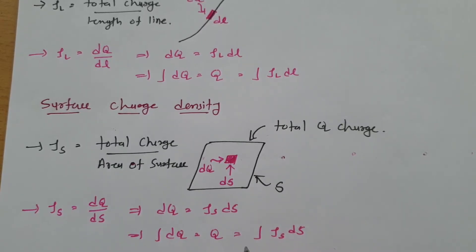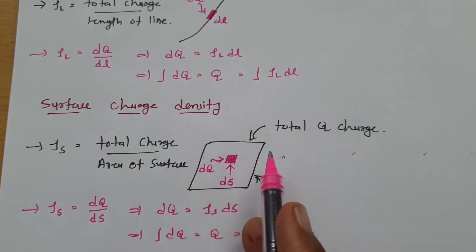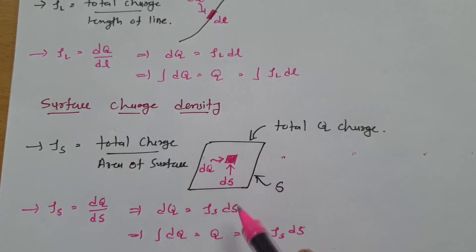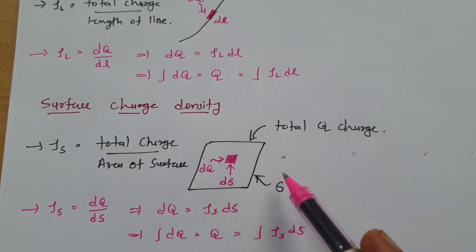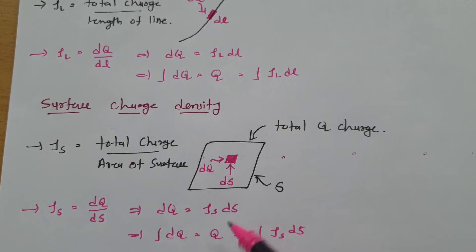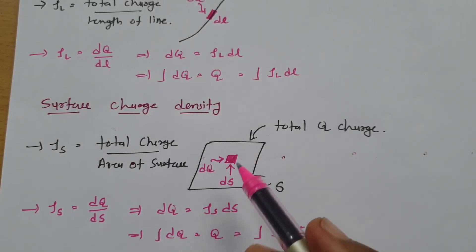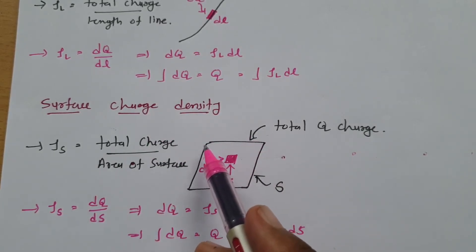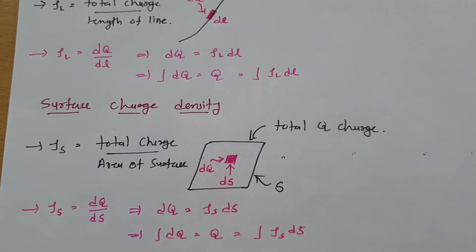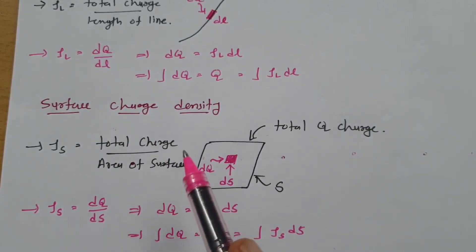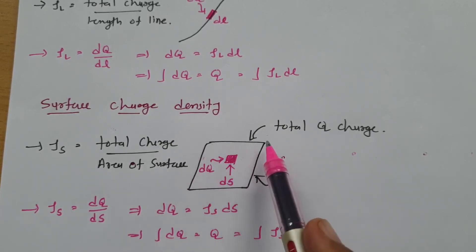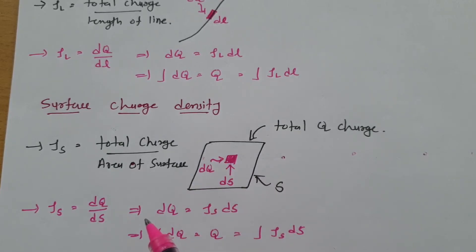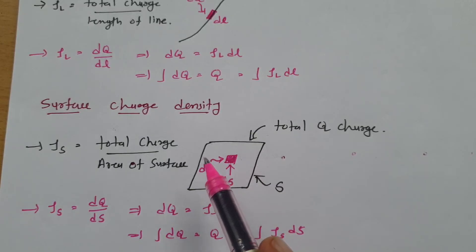By surface integration of surface charge density, we can find total charge on a given surface. Sometimes the surface is given and the surface charge density is a function of coordinates, so you perform the surface integration to calculate the total charge. In practice, surface charge density applies to paper foil with deposited charge, and it's also important in capacitors — the two parallel plates of a capacitor can be modeled as surface charge density.